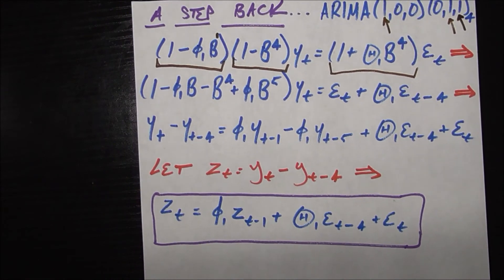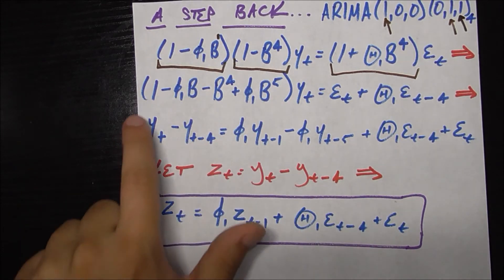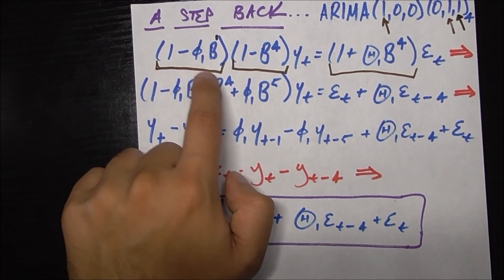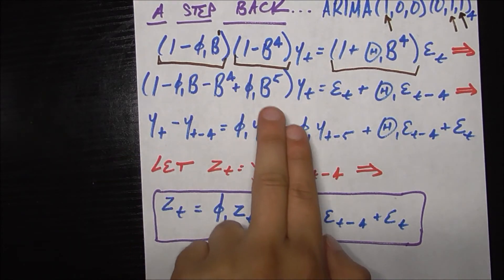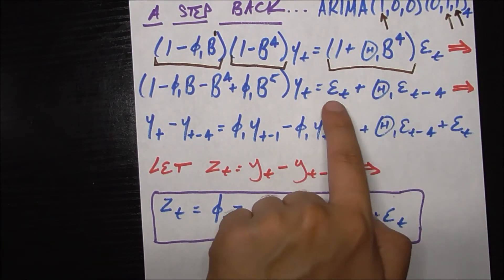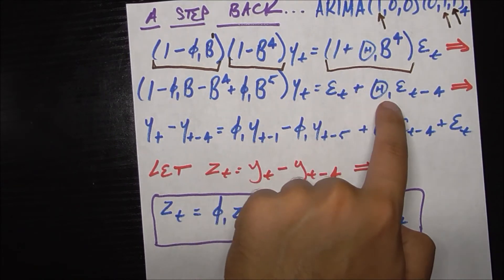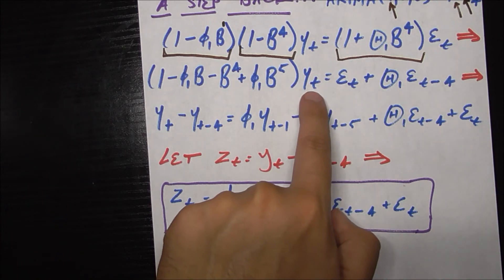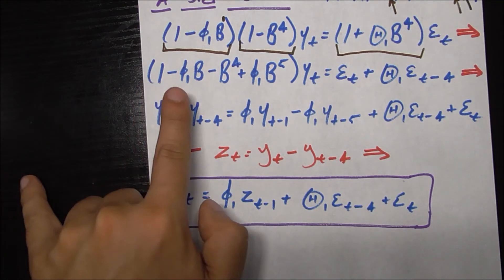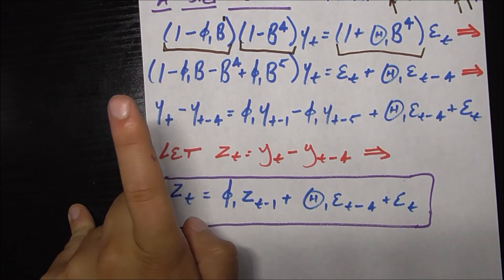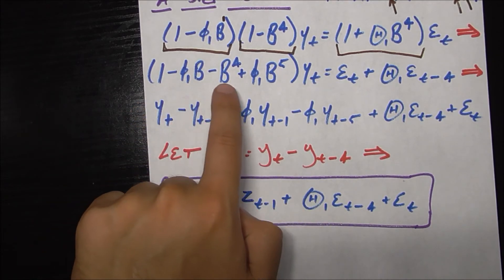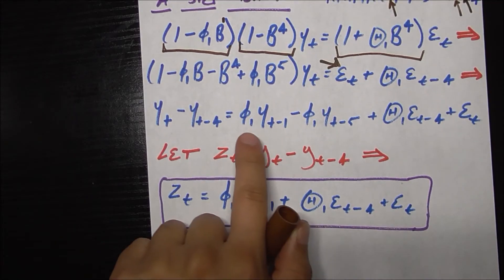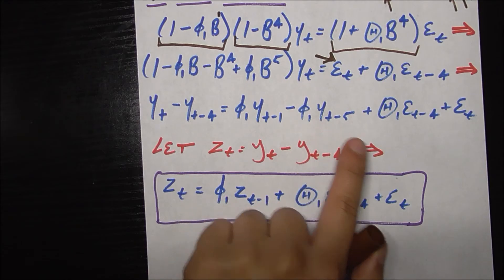Now this is a little bit easier to expand. I'm going to expand these two polynomials, basically multiply them together. So I get one minus phi sub 1 B minus B to the power of 4 plus, because negative negative makes a positive, phi sub 1 B to the power of 5, because this is B1 B4 combined they become B5. Applied to Y sub t is equal to this error multiplied by the one is just itself plus uppercase theta sub 1. This error backshifted four periods in the past is epsilon sub t minus 4. I took all the other terms on this side of the equal sign, which is why you're seeing phi sub 1 Y sub t minus 1 minus phi sub 1 Y sub t minus 5 plus these terms we already had.